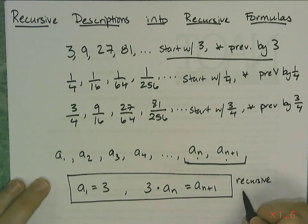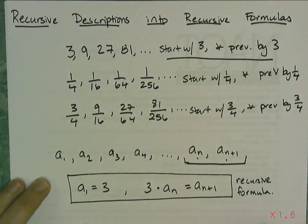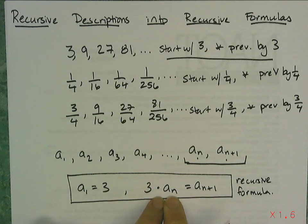And these two components right here form a recursive formula. It's a formula that will generate each term of the sequence, but it's described recursively, which means it requires the previous value to find the next value.